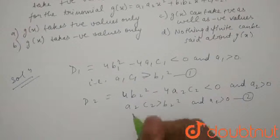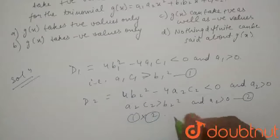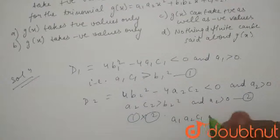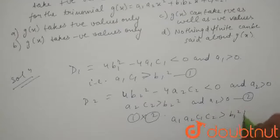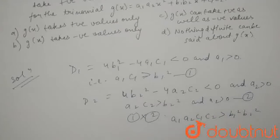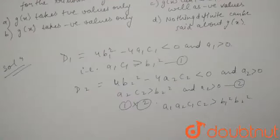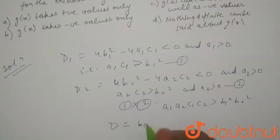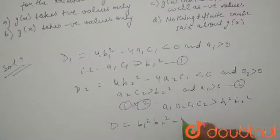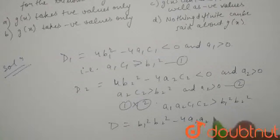When we multiply the first equation and second equation, we get a₁a₂c₁c₂ > b₁²b₂². Now, when we consider g(x), we can write its discriminant will be b₁²b₂² - 4a₁a₂c₁c₂. This is the discriminant of g(x).